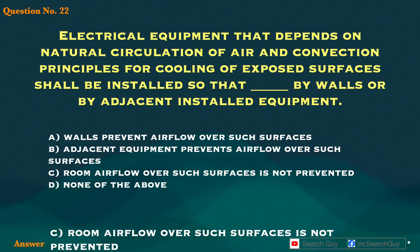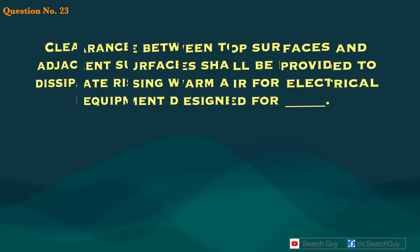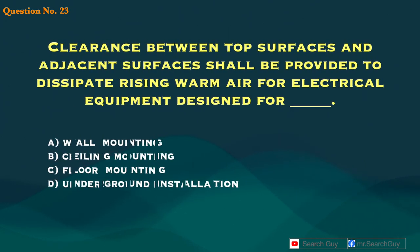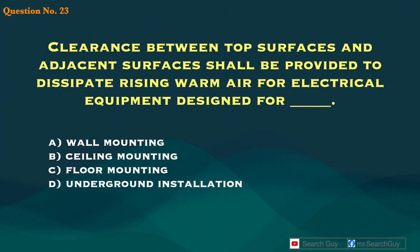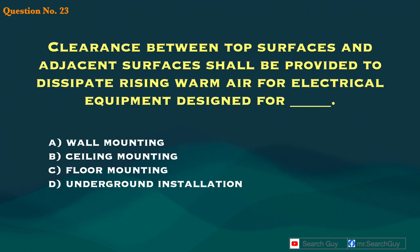Question 23. Clearance between top surfaces and adjacent surfaces shall be provided to dissipate rising warm air, for electrical equipment designed for blank. A. Wall mounting. B. Ceiling mounting. C. Floor mounting. D. Underground installation.